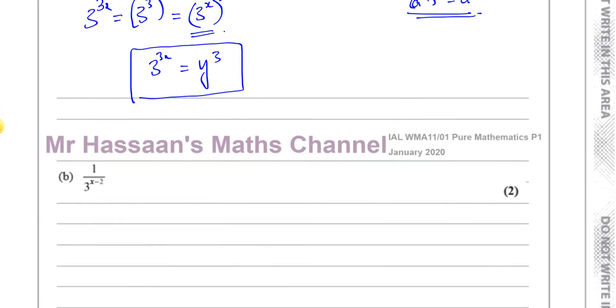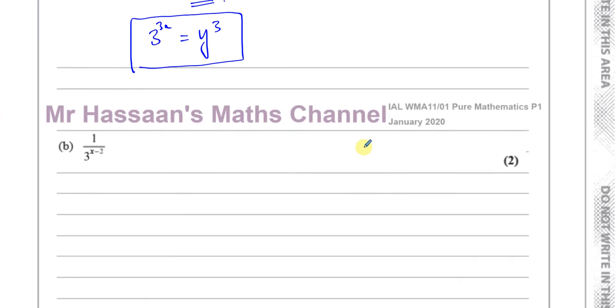Now part b: remember we have y equals 3 to the power of x, and we have to express things in terms of y. We've got to break this down in such a way that we end up with 3 to the power of x.